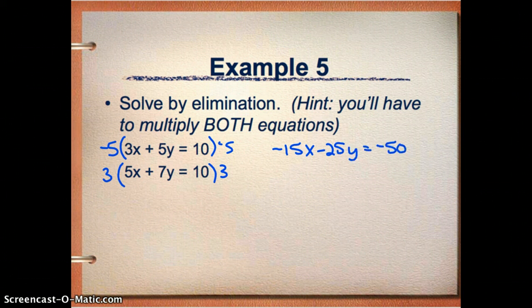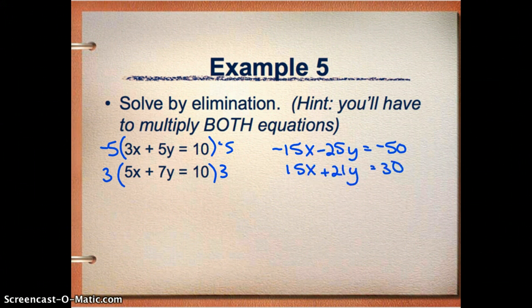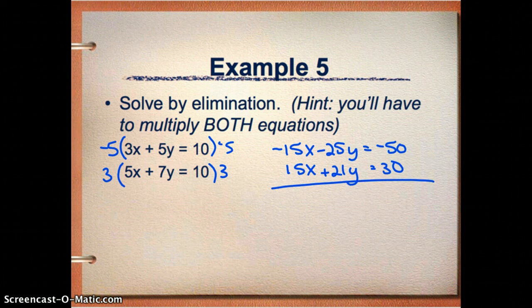So it looks like the first one is going to be negative 15x minus 25y equals negative 50. And then the bottom one, if I multiply by 3, is going to be 15x plus 21y equals 30.